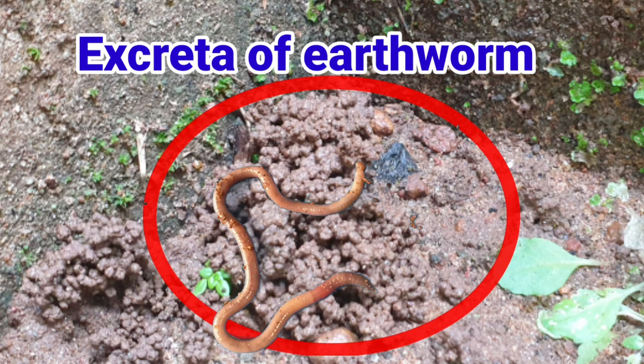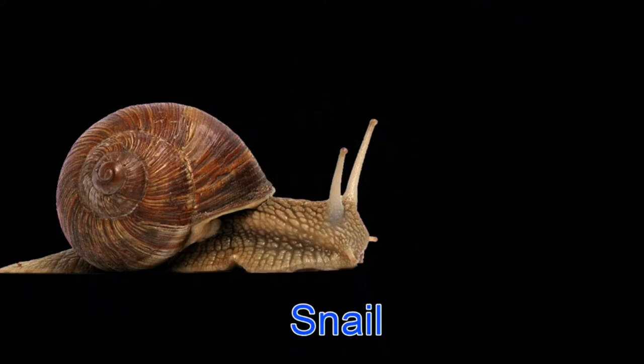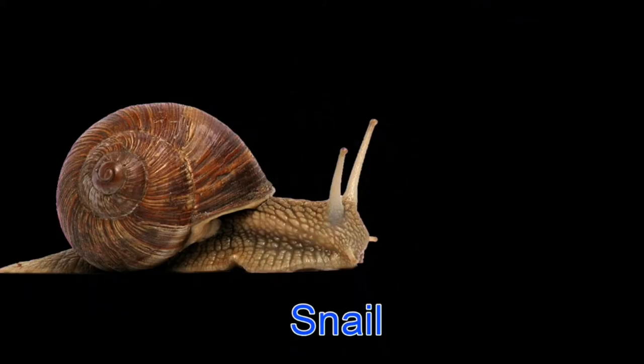The earthworm actually eats its way through the soil. Its body then throws away the undigested part of the material that it eats. This activity of an earthworm makes the soil more useful for plants.